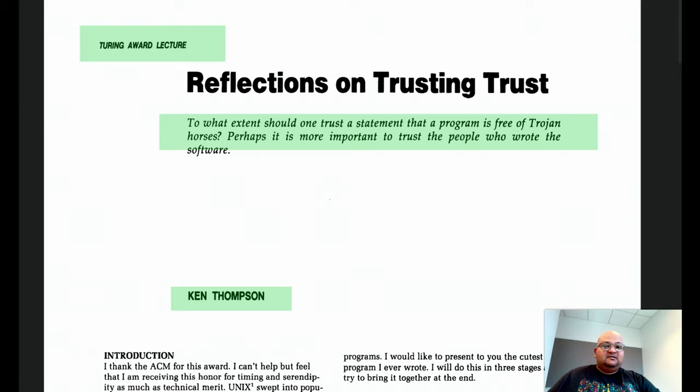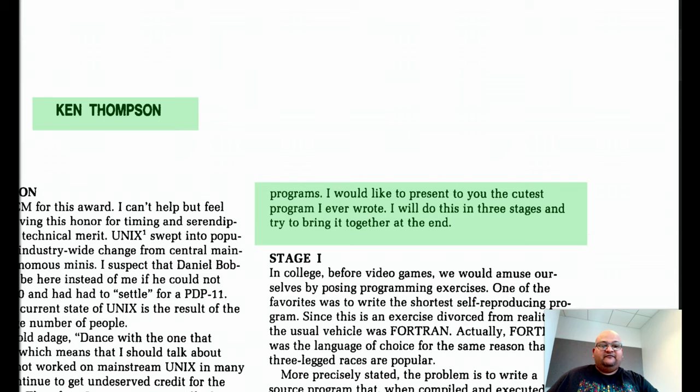A Trojan horse is a backdoor or a bug that is intentionally inserted into a program, usually for some nefarious purpose. He starts out very innocuously by presenting it almost as a cute hobby, but we'll see that by the end things get pretty dark.